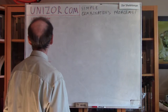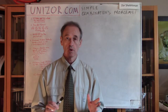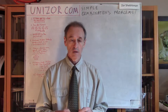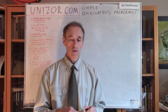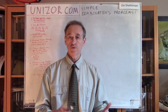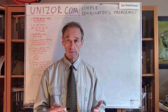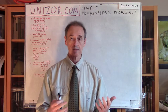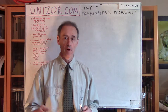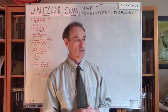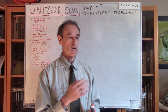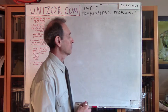Problem number one. Imagine you're playing Bridge — the card game. You have 52 cards in the deck, and they are dealt among four players. Each one gets 13 cards in the beginning. So you are one of the players, and you get your 13 cards. The question is: how many different sets of 13 cards — usually called a hand — can you get after the dealer deals the cards? So, how many different hands can you get out of 52 cards?